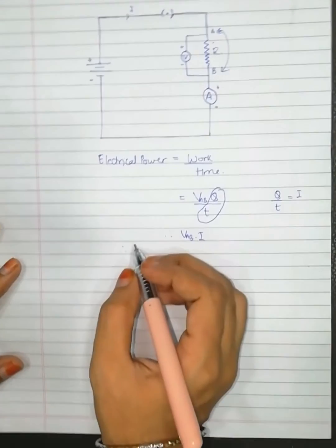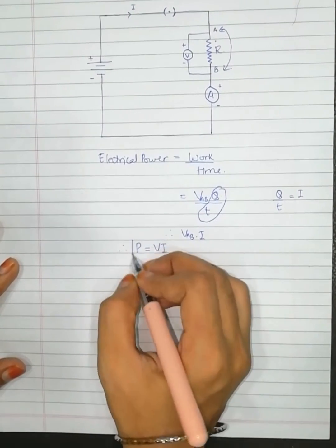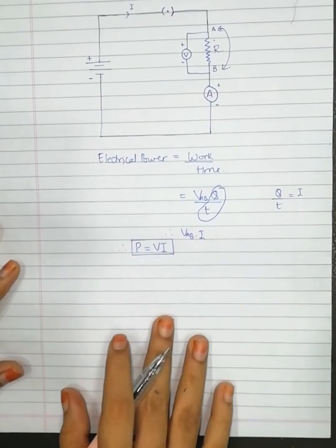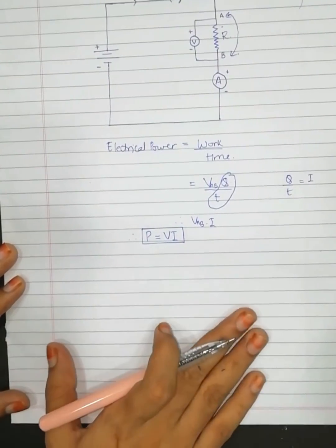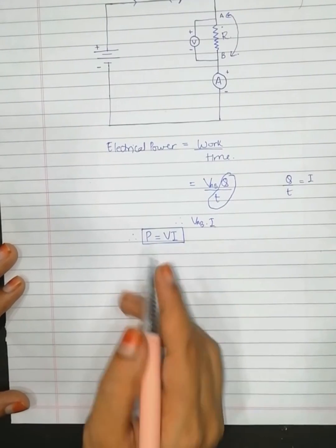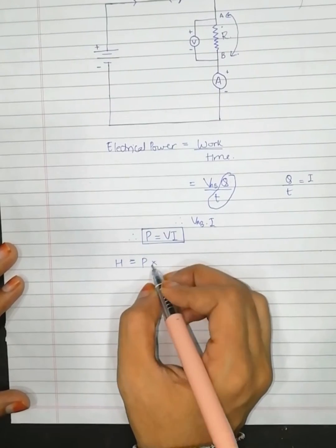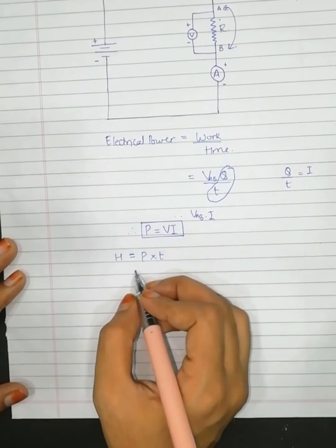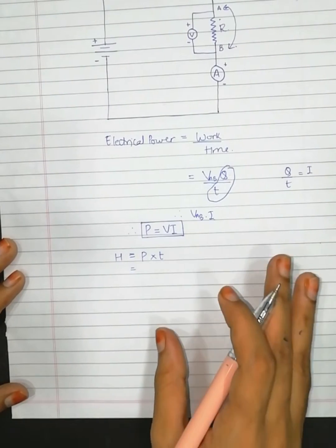So simply we have the electrical power or the power to be equal to V into I. Now, if the current is flowing continuously, then heat will be produced and this heat will be given as the product of power into the time.